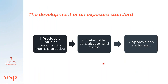The development of an exposure standard from an agency's perspective — such as Safe Work Australia — takes three main steps: first, produce the value using the science; second, stakeholder consultation and review for feasibility; and third, approve and implement it across industry and the nation. WSP's objective was to come up with the numbers — looking at the science and determining the concentrations. We didn't run the stakeholder or implementation parts of the process, though we would answer sticky scientific questions from stakeholders as needed.